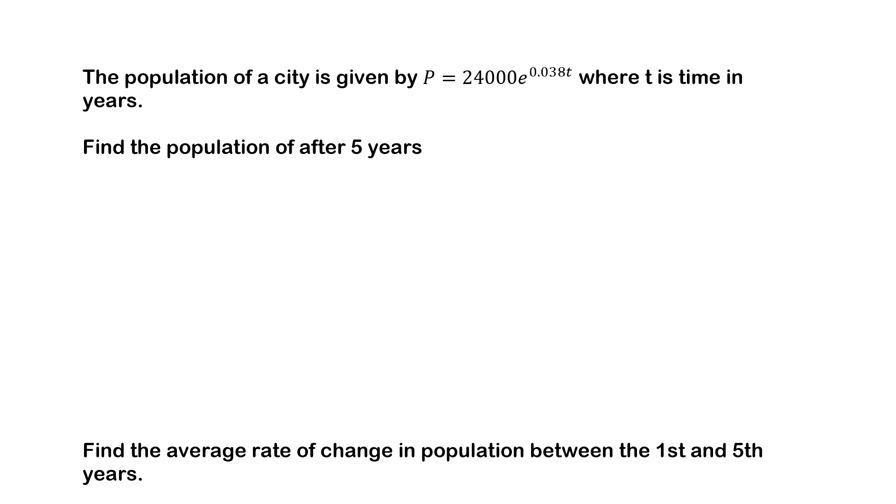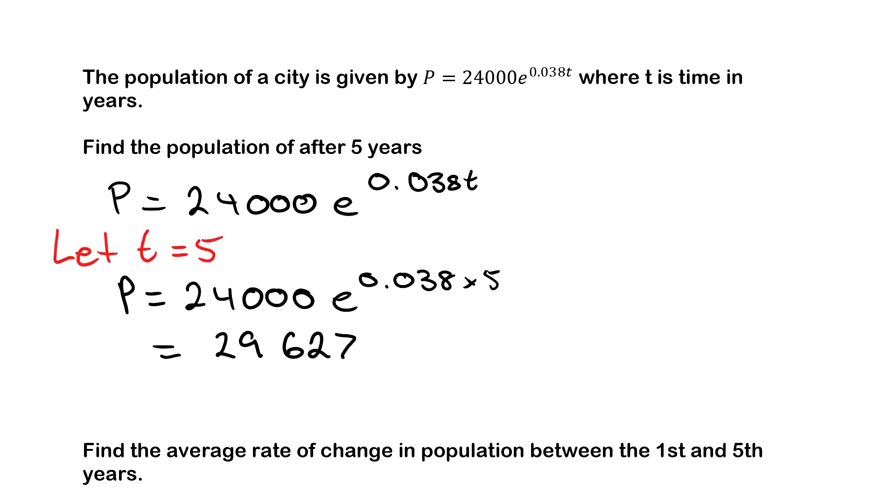Next we have a word problem. The population of a city is given by P equals 24,000e to the power of 0.038t, where t is time in years. So for this first one, we know we have P equals 24,000e to the power of 0.038t, and we're going to say let t equal 5. So P is going to be 24,000e to the power of 0.038 times 5, and that comes out as 29,627. So after 5 years, the population is 29,627.